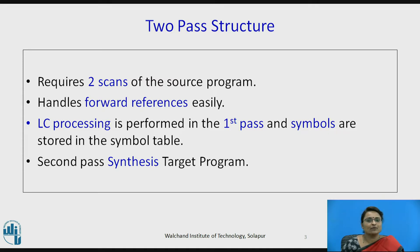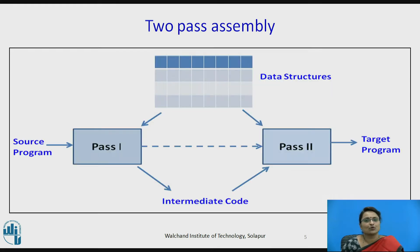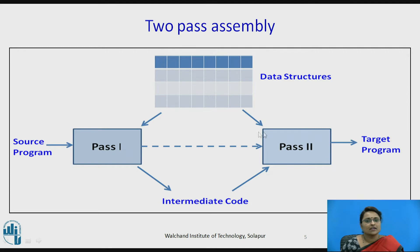The second pass automatically uses the generated symbol table and synthesizes the target program. This two-pass structure analyzes the program in the first pass, which we call the analysis phase, and the second pass synthesizes the program. Pass one reads the source program and generates data structures as well as intermediate code, called the intermediate representation. Pass two reads this intermediate representation and generates the target program.